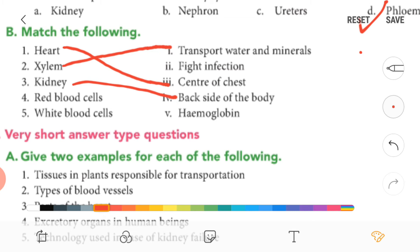Now fourth one, red blood cells contain hemoglobin. So answer is five.